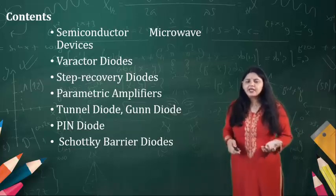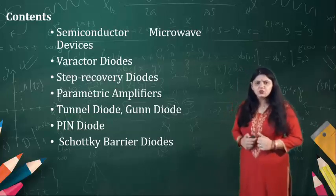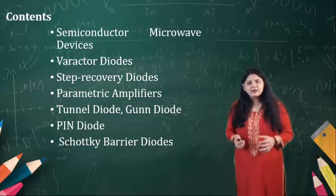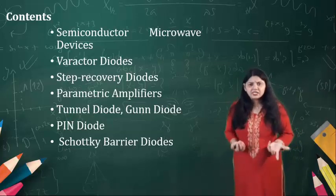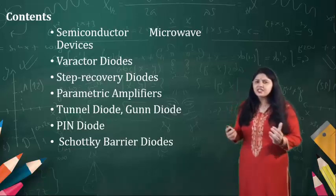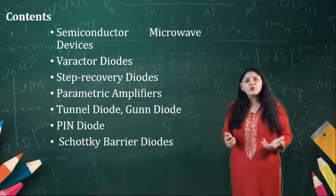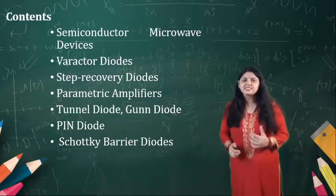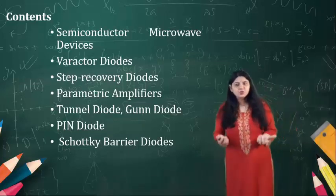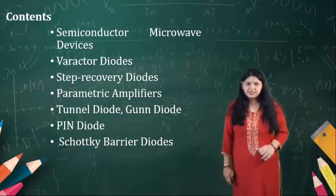So that is why it is divided into two different parts. One is known as Avalanche transit time devices, and the others are known as bulk devices. Avalanche transit time devices are designed to achieve the minimum transit time, and the bulk devices use the bulk property of the semiconductor material.